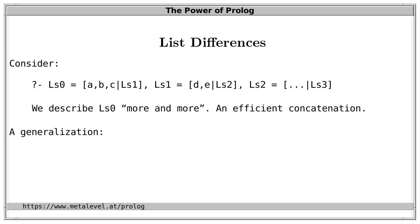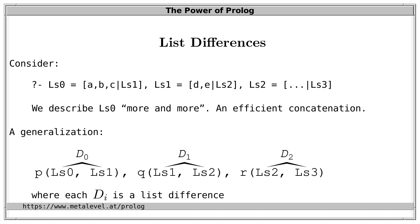Now let's consider a generalization of this. So far, the only predicate we have used is equality. Let's now generalize this to arbitrary predicates. Let's say P of LS0 and LS1, Q of LS1 and LS2, and R of LS2 and LS3. So instead of only unification, we allow arbitrary predicates.